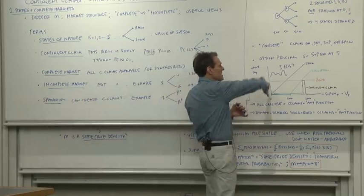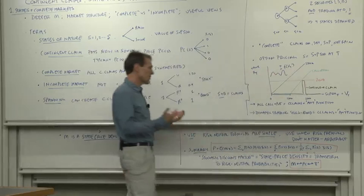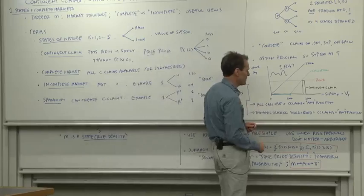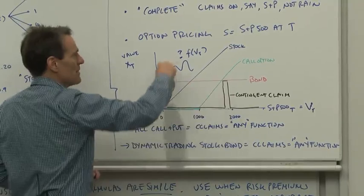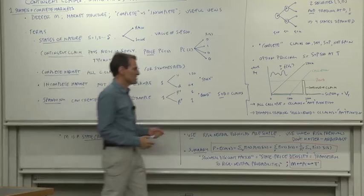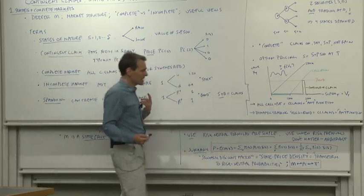So a complete question is, can we get any shape of payoff? Can we get any function? And so here we have some classic spanning theorems. If you have all call and put options available, then you can synthesize any contingent claim. And of course, from any contingent claim, you can synthesize any function, any payoff you'd like.